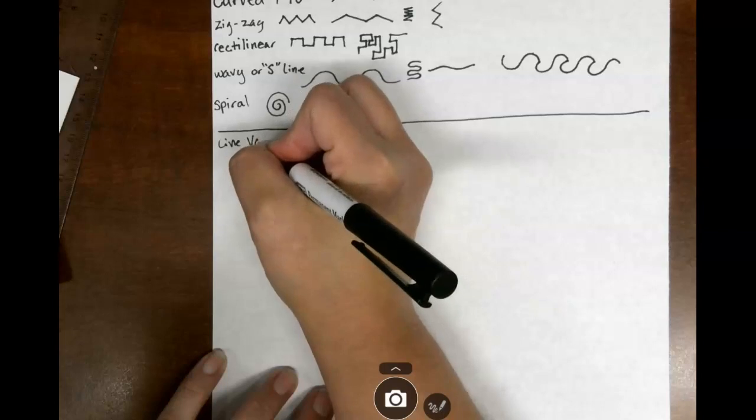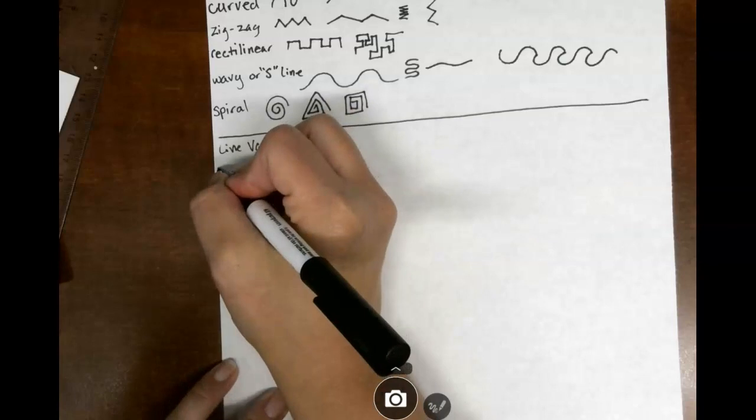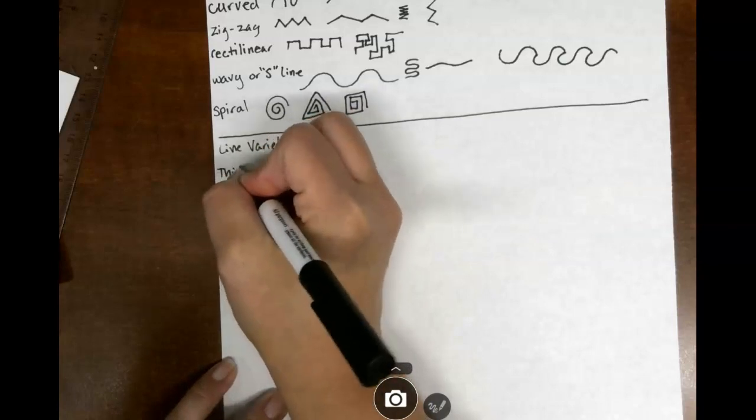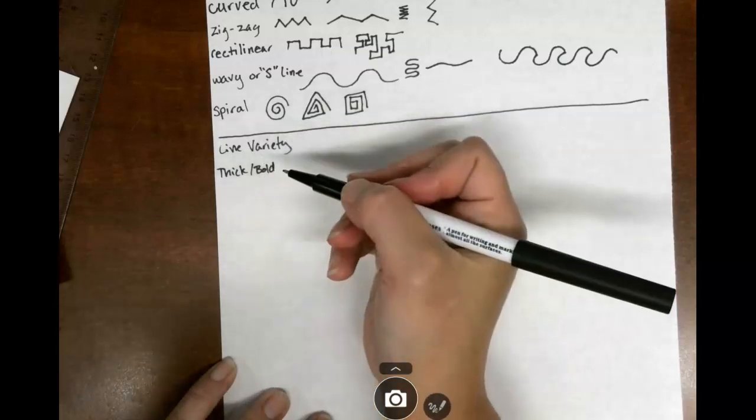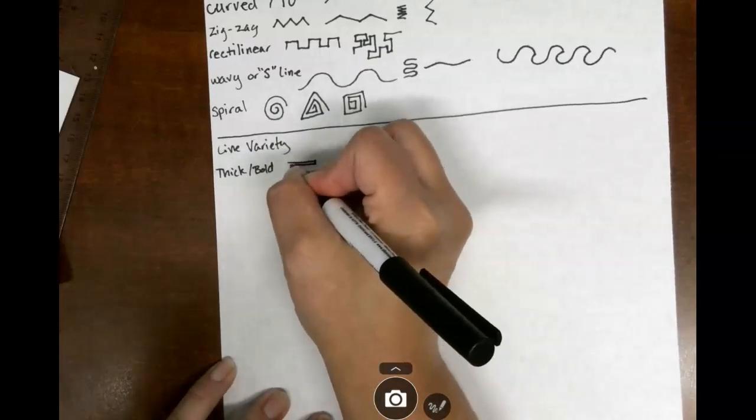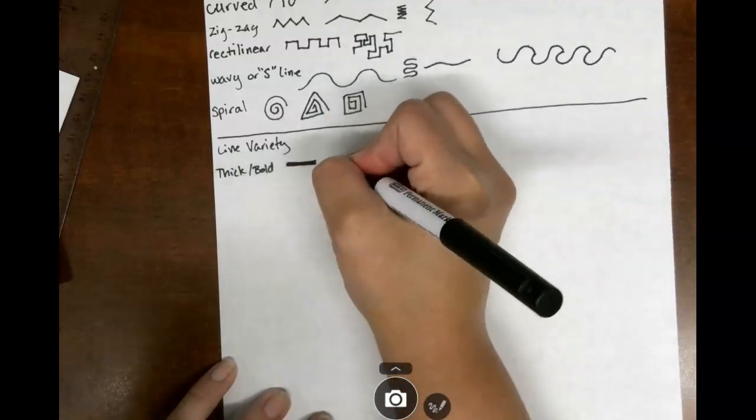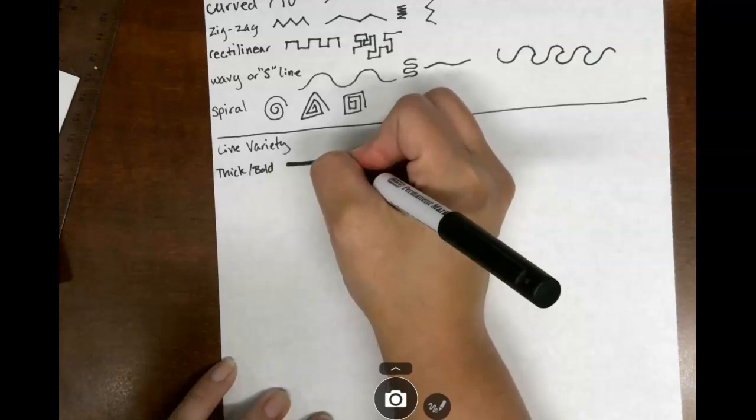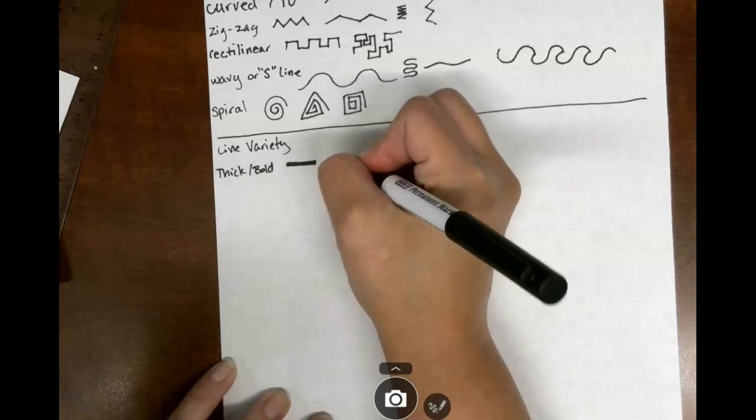V-A-R-I-E-T-Y. This means variations on your lines. So we have either the thick or bold line. Now I have a really thin tip here, so how we do that is we make ourselves a tiny rectangle and color that line in. That's how we can get ourselves a bold line. This can go for just about any kind of line.